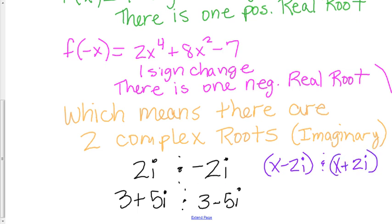For 3 plus 5i, if you were going to write the linear factors, it would be x minus 3 minus 5i. That would be for this one.